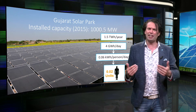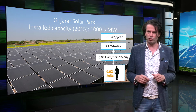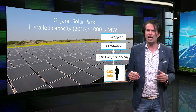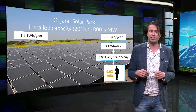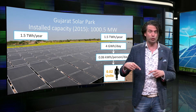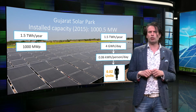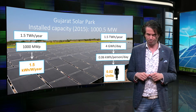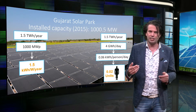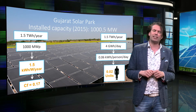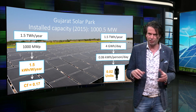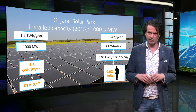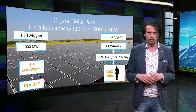We can also get a figure of the energy production per watt of installed capacity. For the Gujarat Solar Park, we divide the 1.5 TWh per year by the installed capacity, which gives approximately 1.5 kWh per Wattpeak per year. Dividing again by the hours in a year gives a capacity factor of around 17%, which is lower than the capacity factors of hydroelectricity and wind energy discussed earlier this week.